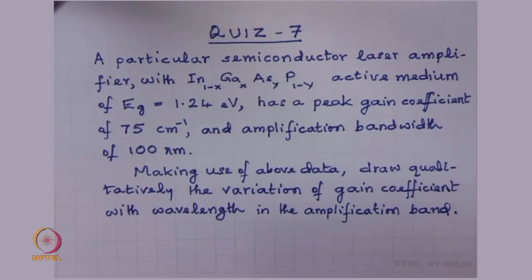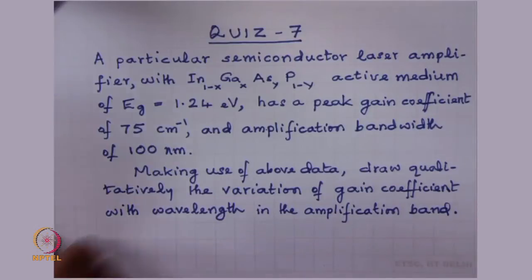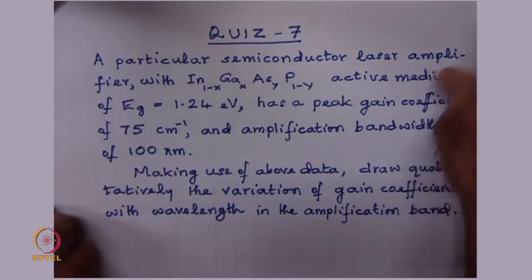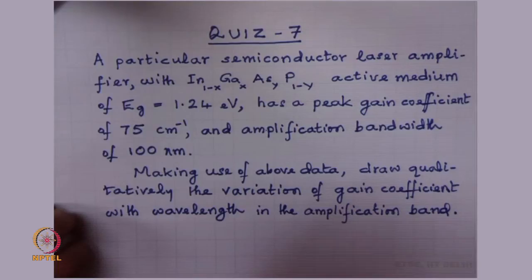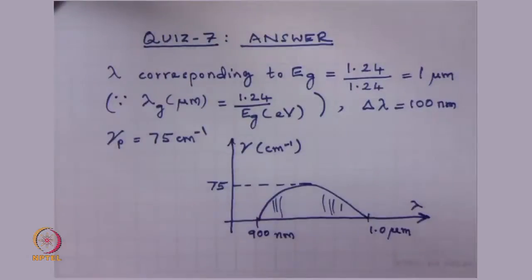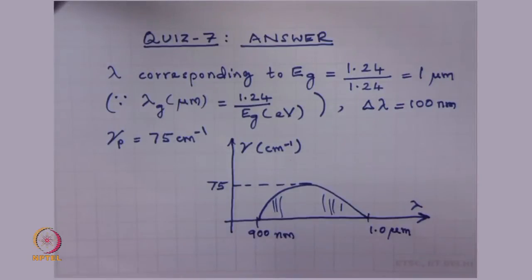As I keep on repeating, the quiz is a simple question — you should think simple and a little quick. The answer is very simple; most of you tried to see a complicated answer. The fact that Eg was given as 1.24 eV should have been a hint that it gives lambda equal to 1 micron, because lambda equals 1.24 divided by Eg in electron volts.